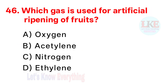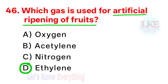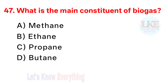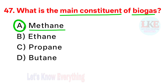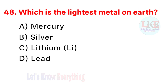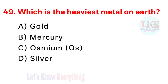Question number 46: which gas is used for artificial ripening of fruits? Right answer option D: ethylene. Question number 47: what is the main constituent of biogas? Right answer option A: methane. Very important question — remember it. Question number 48: which is the lightest metal on earth? Right answer option C: lithium. Question number 49: which is the heaviest metal on earth? Right answer option C: osmium, symbol OS.